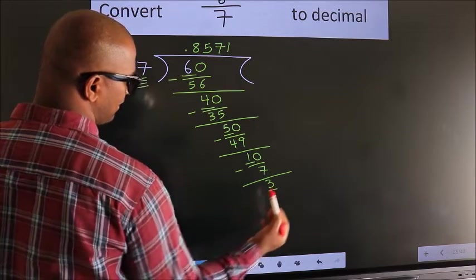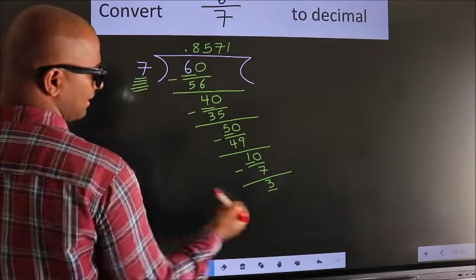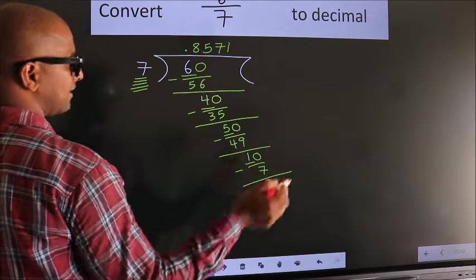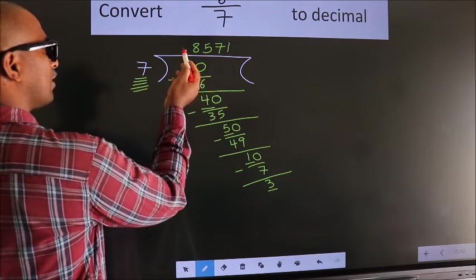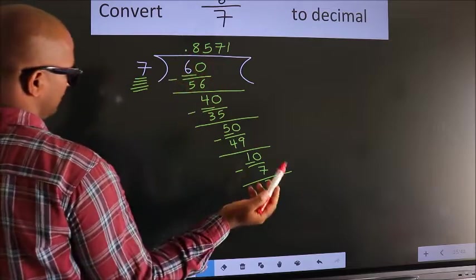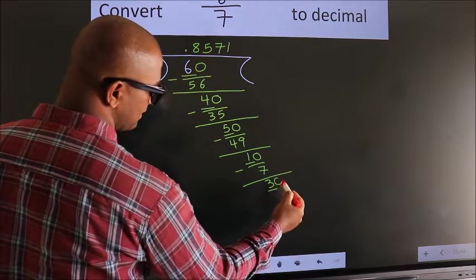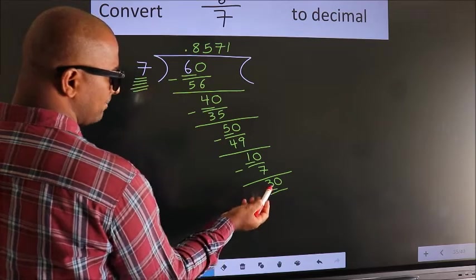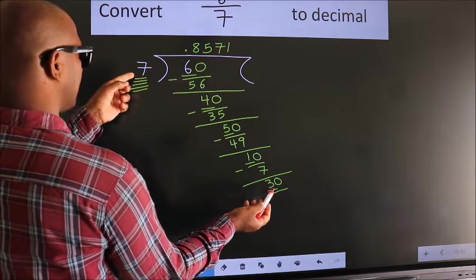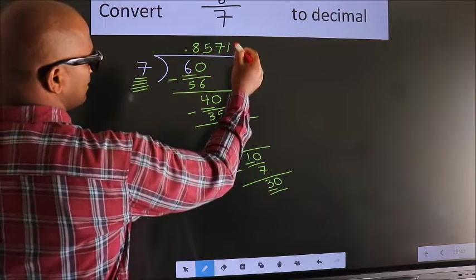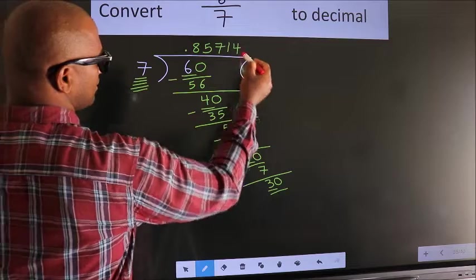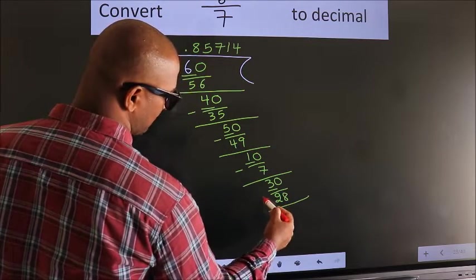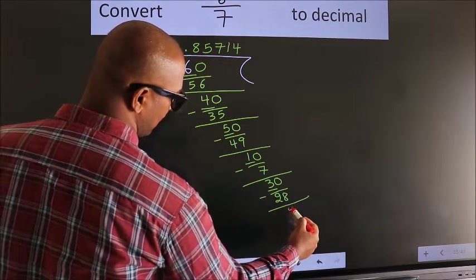Here we have 3, here 7. 3 is smaller than 7. And we already have the decimal, so we can directly take 0. So 30. A number close to 30 in the 7 table is 7 fours, 28. Now we subtract. We get 2.